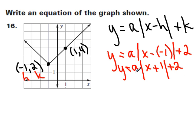So before I can finish this equation, I need to figure out what a is. And to do that, I'm going to pick any point on the absolute value graph. Here's 1, 4, so that's going to be my point x, y.